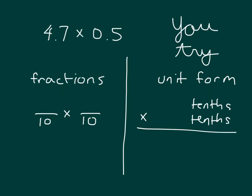Here we have a problem for you to try. We have 4.7 times 0.5, also read as 4 and 7 tenths times 5 tenths. Solve it not only using a fractions approach, but also a unit form approach, knowing that you should get that same answer. Go ahead and pause the video to do your work.